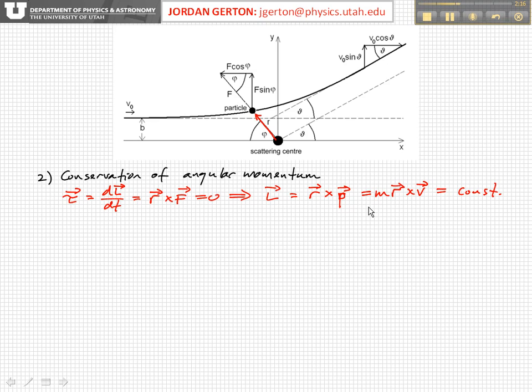Now we know that the magnitude of a cross product is just the product of the two magnitudes times sine of the angle between them. And in this case, the angle between R and V is shown right here, it's phi.